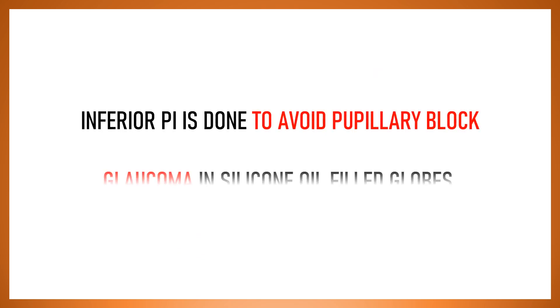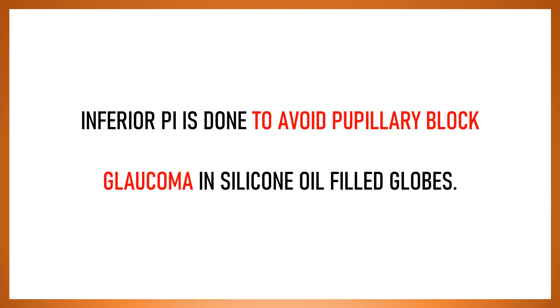So to give a very straightforward answer, inferior PI is done to avoid pupillary block glaucoma in silicon oil filled globes.